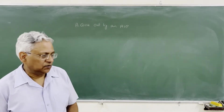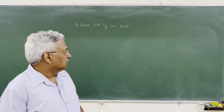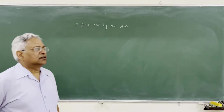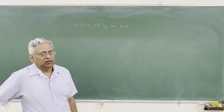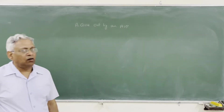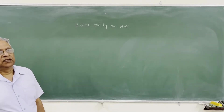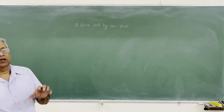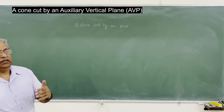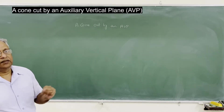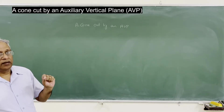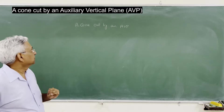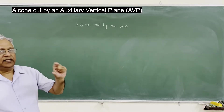Hello friends, today we will discuss the sectioning and development of a cone when it is cut by an auxiliary vertical plane. The cases of solid cut by a vertical plane we have already discussed in earlier sessions. Now the cutting plane is an auxiliary vertical plane — it is not parallel to the vertical plane but inclined to it. So let us take the case of a cone.